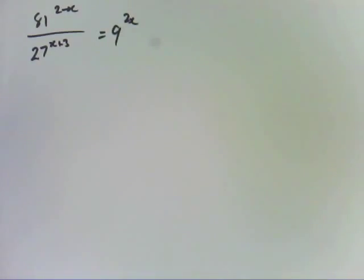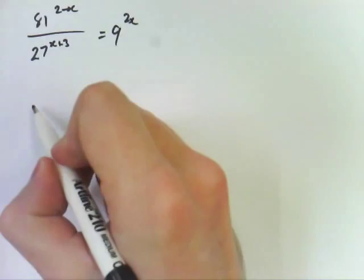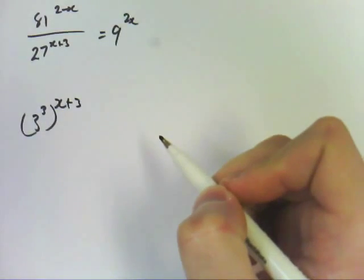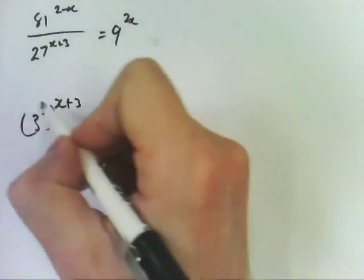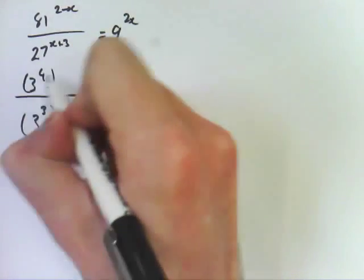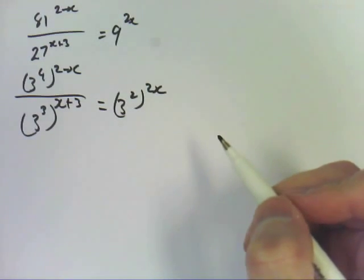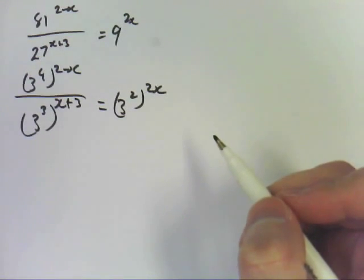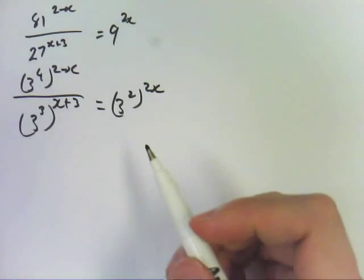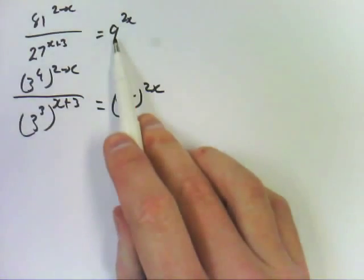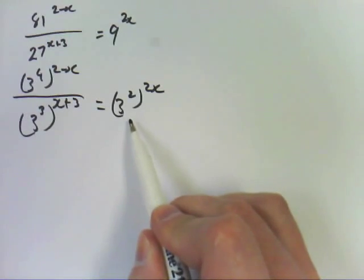27 is 3 cubed. So, 3 cubed to the x plus 3. 81 is 9 squared, which is also 3 to the 4. So, you just go for the highest power possible. You go for the lowest base, the simplest base. The base you cannot go any further. So, let's go through that again because that happened real quick. We know 9 is 3 squared. So, 3 squared to the 2x. Happy with that.